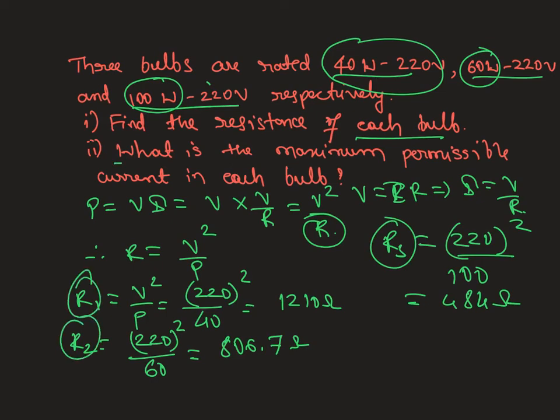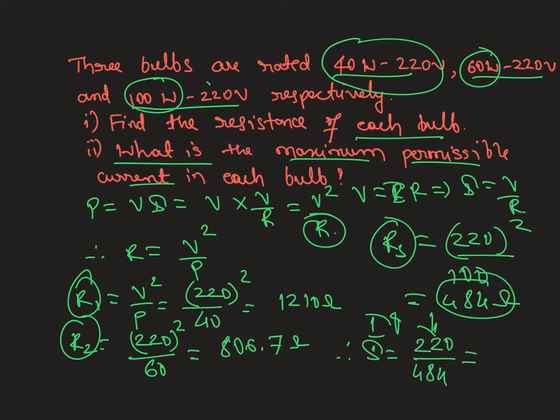Next question: What is the maximum permissible current? The maximum current will be where resistance is minimum. The minimum resistance is 484Ω. Therefore, I = 220/484, which gives 0.45 ampere. This is the maximum permissible current in the circuit.